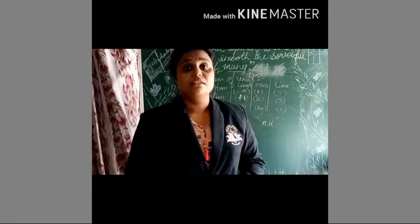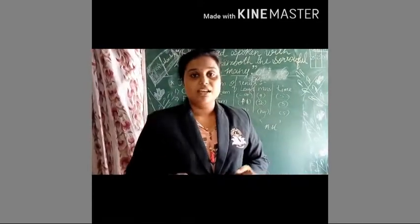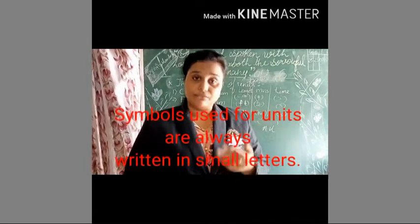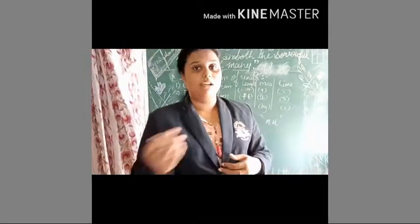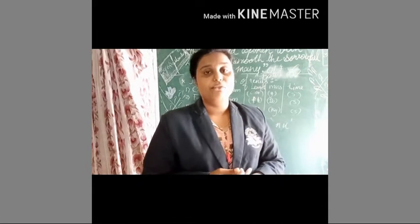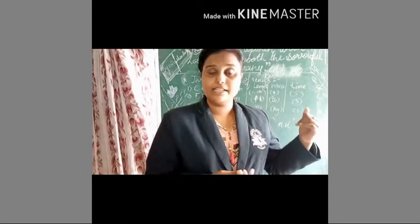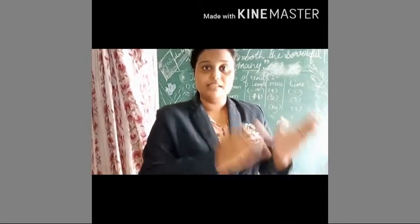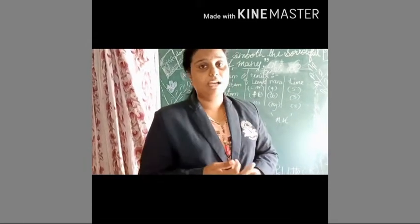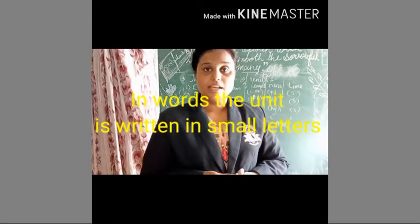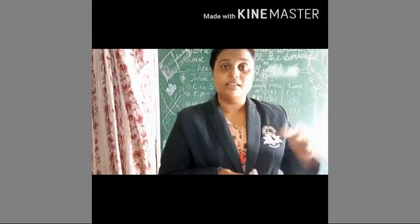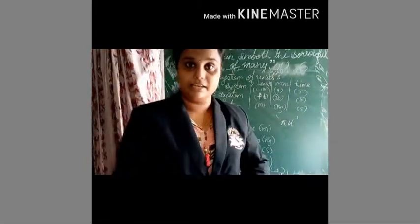There are seven basic rules to write SI units. First, SI units are written in small letters. Second, when a unit is named after a scientist, we write it in capital form — for example, temperature's unit is Kelvin, named after a scientist, so we write capital K. But when written in words, we use small letters. Third, never use a plural form of SI units.